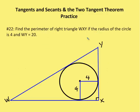Moving on, next problem. We want to find the perimeter of right triangle WXY if the radius of the circle is 4, and WY, this entire length here, is 20.